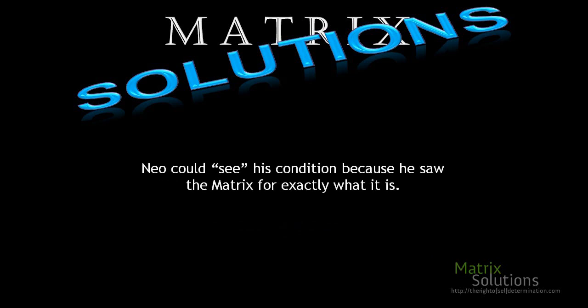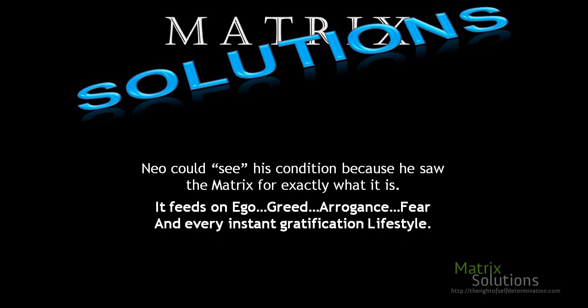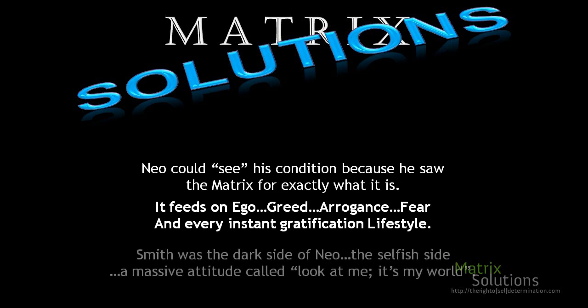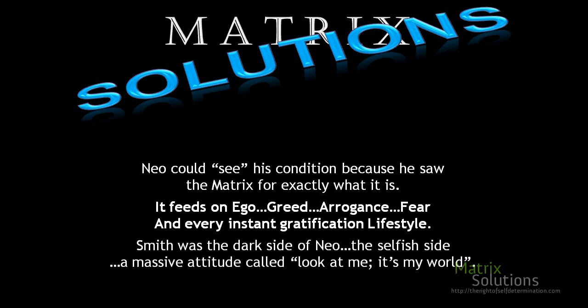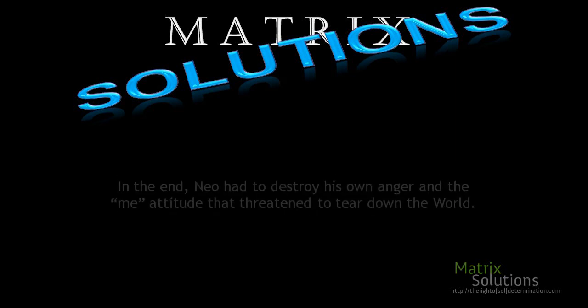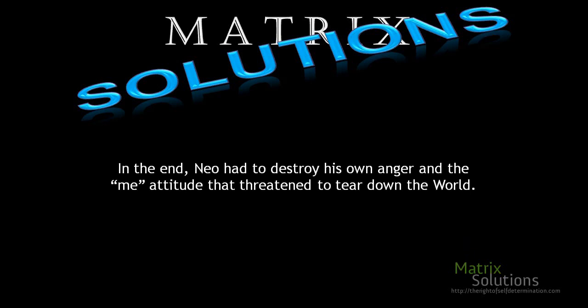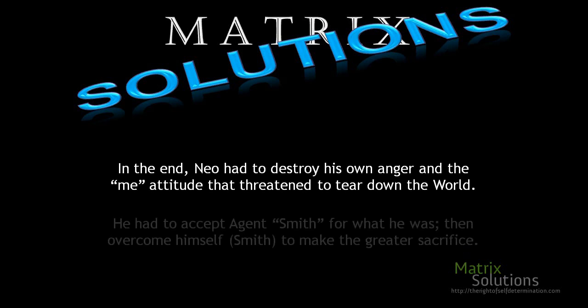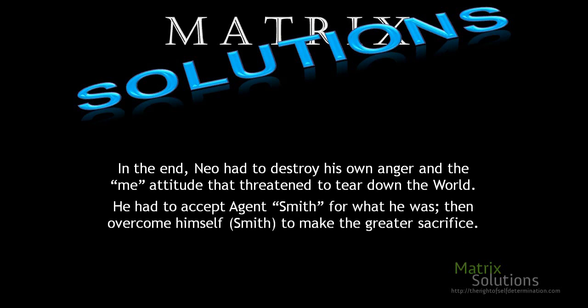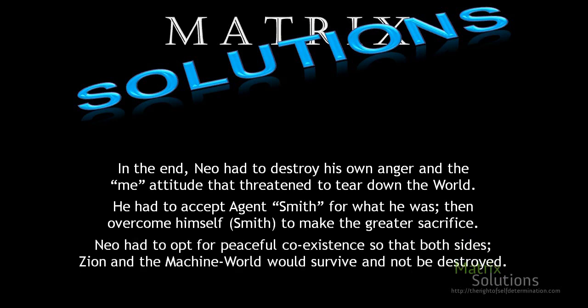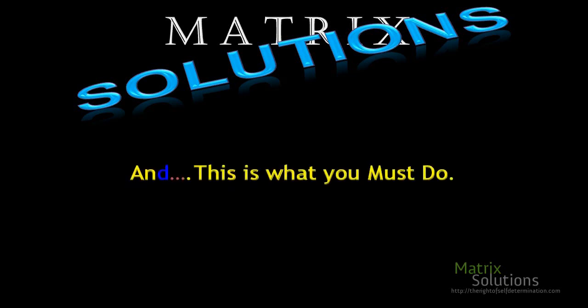Neo could see his condition because he saw the matrix for exactly what it was — it feeds on ego and greed, arrogance and fear, and every instant-gratification lifestyle. Smith was the dark side of Neo, the selfish side with a massive 'look at me' attitude. In the end, Neo had to destroy his own anger and the 'me' attitude, accept agent Smith for what he was, overcome himself, and opt for peaceful coexistence so that both sides — Zion and the machine world — would survive.